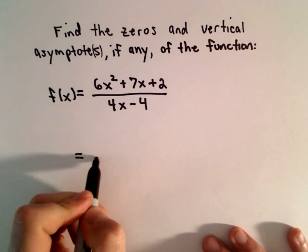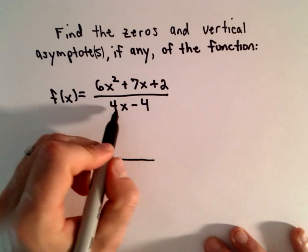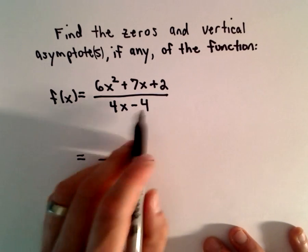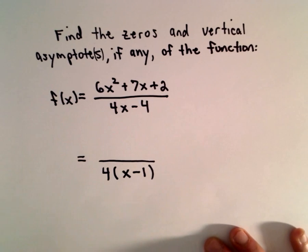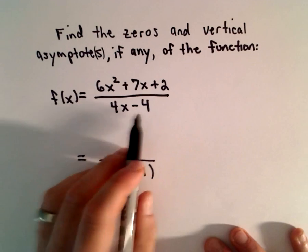The denominator looks easier to me. We have a 4 in common, so we can factor out the 4, we would have x - 1 left over. If you distribute, we'll get 4x - 4.